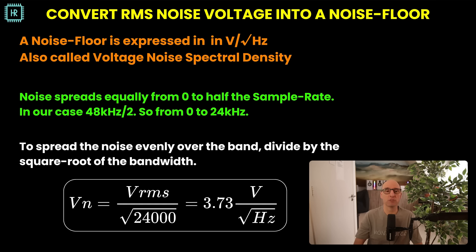The most common way to express a noise floor is in volts per square root of Hertz — basically the noise voltage in a bandwidth of 1 Hz, also called voltage noise spectral density. Because this is a sampled signal, the noise can only exist up to half the sample rate, meaning all the RMS noise voltage spreads evenly in a band of 0 to 24 kHz. Dividing the RMS voltage by the square root of the bandwidth gives a noise floor of 3.73 volts per square root of Hertz.